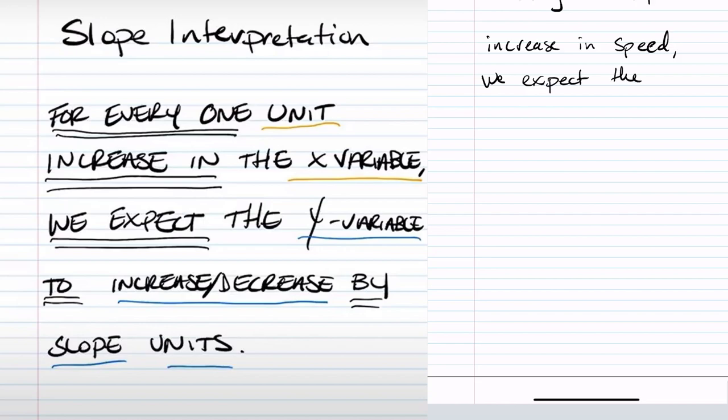And now because the slope was positive, we're going to say increase, and then by, and our slope value is 3.932, and the units for that was feet.